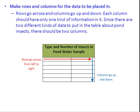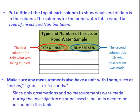Then, you're going to want to make rows or columns for the data to be placed in. Rows go across and columns go up and down. Each column should have only one kind of information in it. Since there are two different kinds of data to put in the table about pond insects, there should be two columns. Then, you put a title at the top of each column to show what kind of data is in that column. The columns for the pond water table should be 'type of insect' and 'number seen.' Make sure any measurements also have a unit attached to them, such as inches, grams, or seconds.